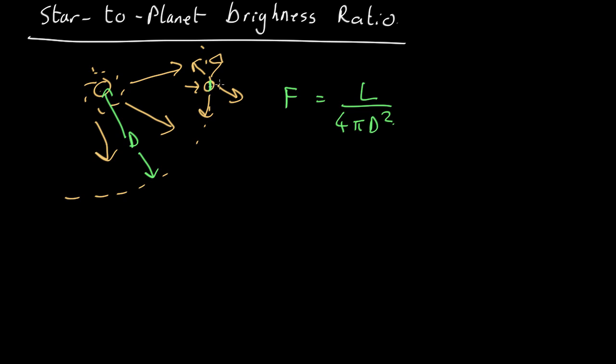So the flux out of the sphere is just the luminosity of the star over 4πd². Now the radiation actually hitting the planet is going to be its cross-sectional area, πr², where r is the radius of the planet, times the flux. So the flux hitting planet is (πr²) × (L/4πd²) = (r²/4d²) × L.